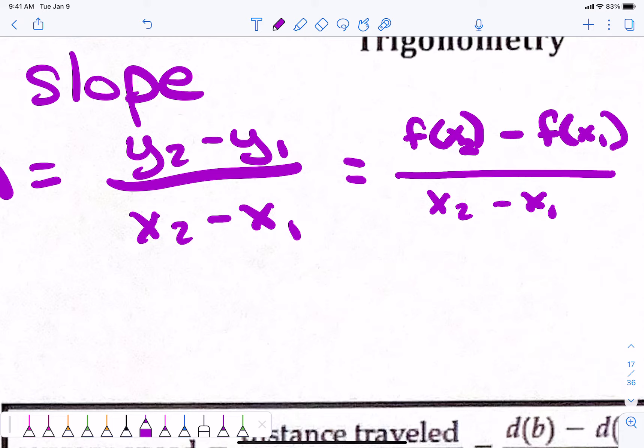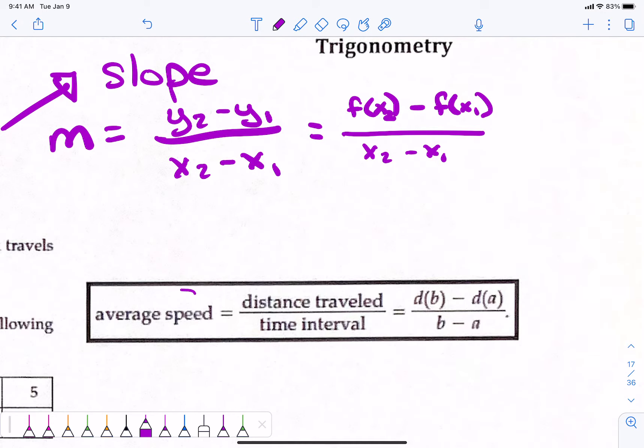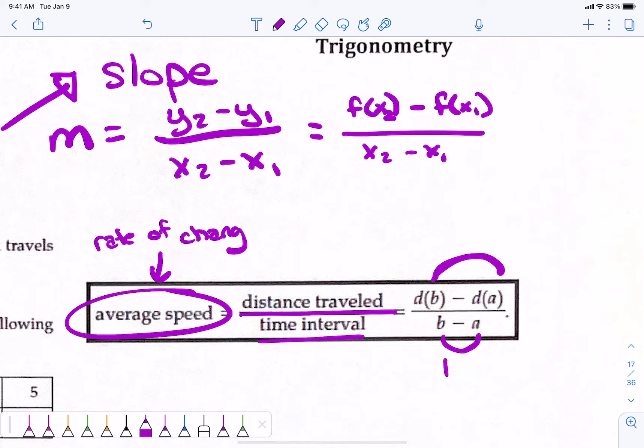Good? Down here, when it talks about average speed, average speed is the average rate of change, right? The rate of change is average speed, and they write it as the distance traveled divided by the time. The distance traveled is taking the y coordinates or the distance coordinates and subtracting them, and this is your time.